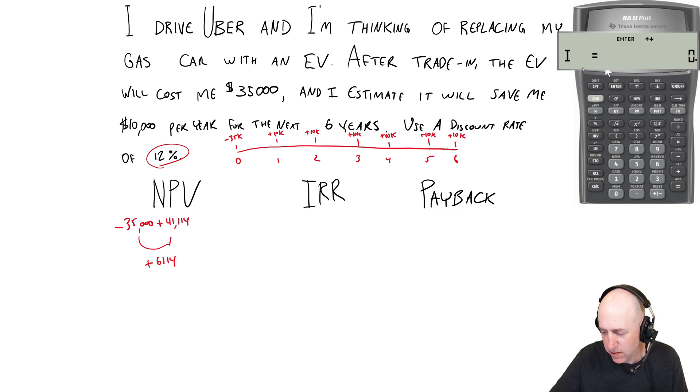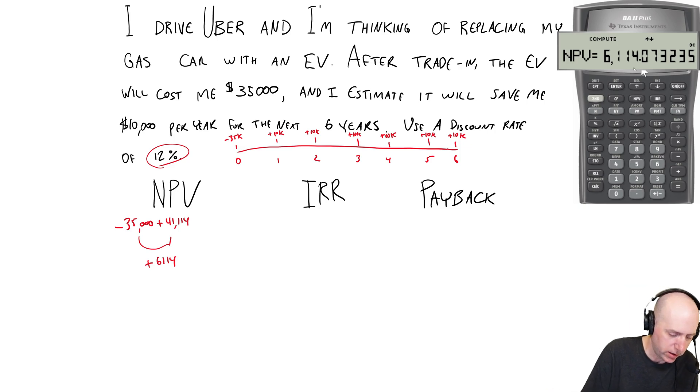I compute NPV. It says, what's your discount rate? My discount rate is 12 enter. I hit the down arrow and I hit compute again. And there it is. 6, 1, 1, 4. And that's the number I had calculated by hand. So just to show you, you can do this by hand or in a financial calculator.